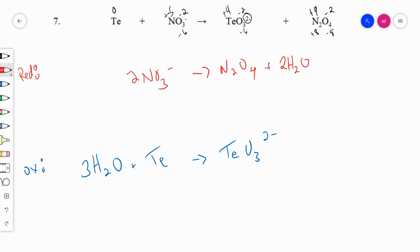Next, add hydrogens. So we have four over here. So we need four H pluses here. Add hydrogens. We have six over here. We need six H pluses on this side.